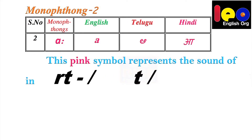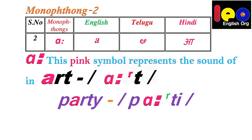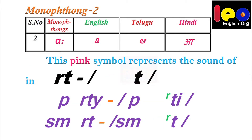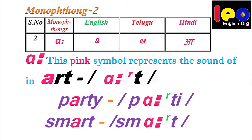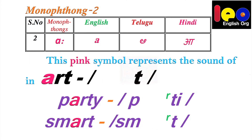Monophthong 2. This pink symbol represents the sound of A in 'art,' A in 'party,' A in 'smart.' If you see two dots after any vowel, please understand that it is the long form of that vowel. All vowels have two forms: short and long. If there are no dots after A, it's just A. If there are two dots after A, please take it as the long A.